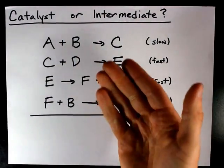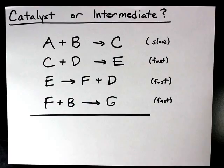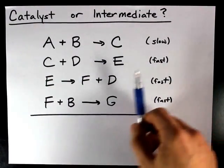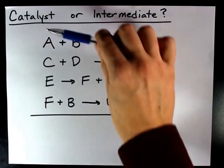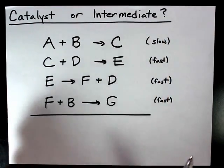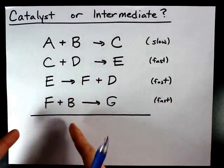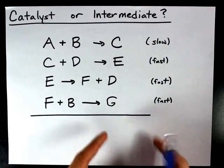I see this question a lot on kinetics tests in high school and university chemistry. Now the first thing I want you to do if you're asked that is to find the overall reaction. They're giving you all the elementary steps, but we want to figure out what the reactants are and what the products are.